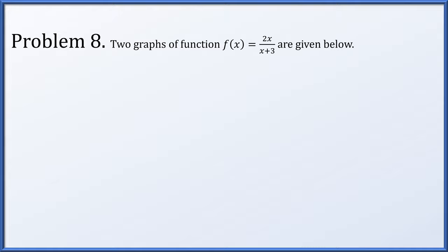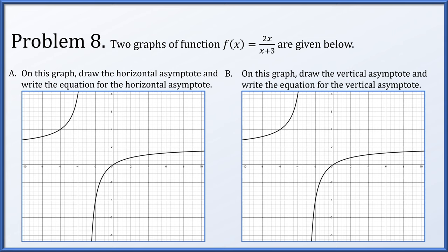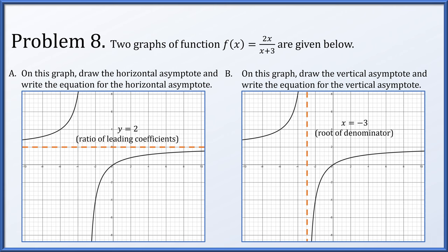Problem 8 is straightforward. We're given two graphs of f(x) = 2x/(x+3) and asked to draw the horizontal and vertical asymptotes and write their equations. Since numerator and denominator are the same degree, the horizontal asymptote is the ratio of leading coefficients: y = 2/1, so y = 2. For the vertical asymptote, we find a root of the denominator: x = -3.